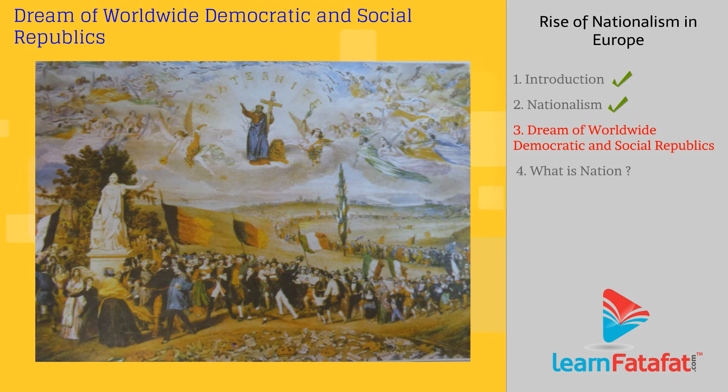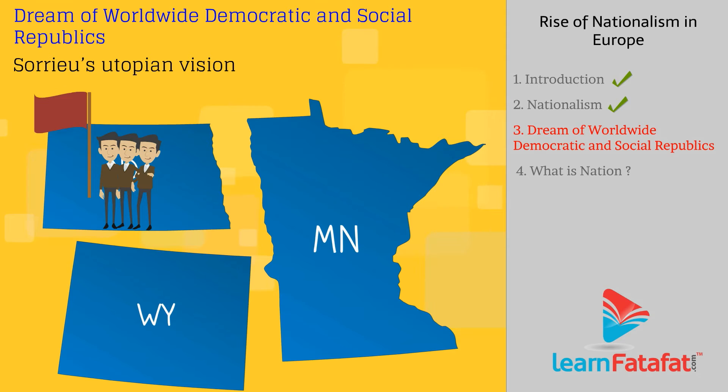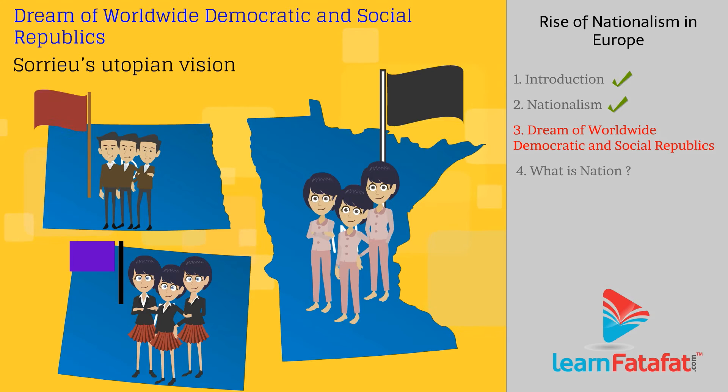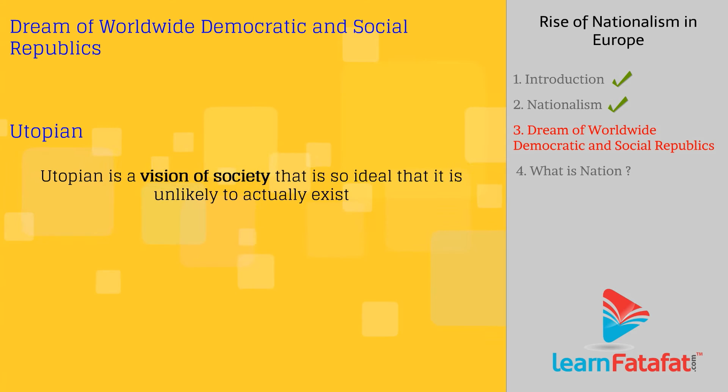Dream of Worldwide Democratic and Social Republics — a print prepared by Frederick Soria in 1848. In Soria's utopian vision, peoples of the world are grouped into distinct nations, identified through their national flags and costumes.